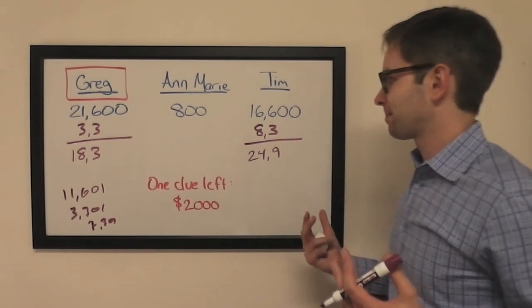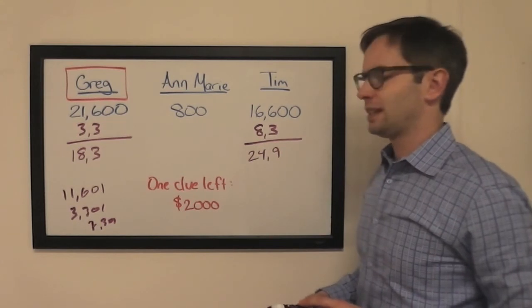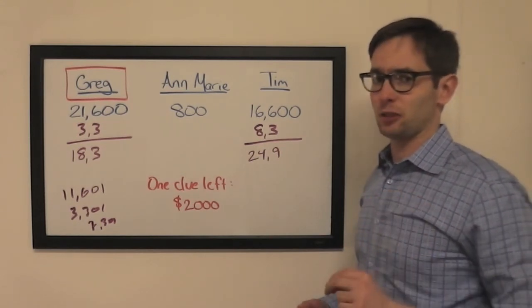He went with $2,600. I guess he just wanted to preserve the lead over Tim, and Tim helped him out big time by missing that $2,000 clue.